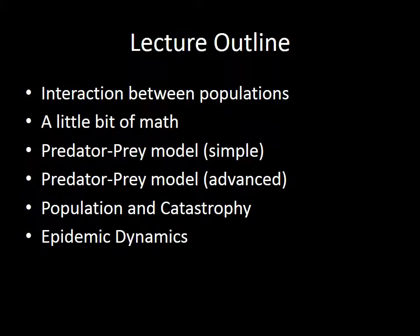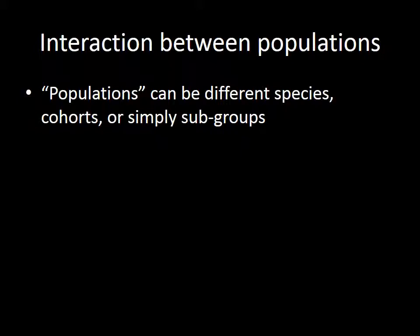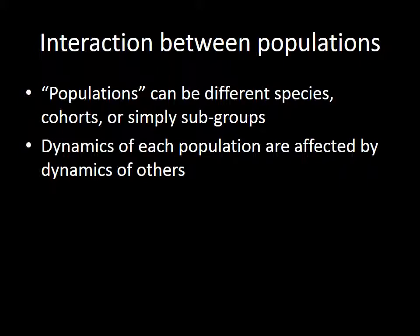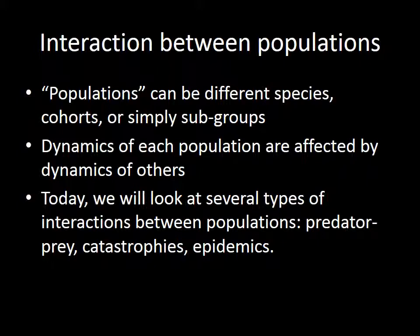Then we're going to talk about another type of interaction between populations, which is epidemics and how epidemics move over time. When we speak about populations — plural — those could be different species, different cohorts, or simply subgroups. The key characteristic of these interactions is that the dynamics of each population are affected by the dynamics of others, so it's a mutual interaction. Today we'll focus on predator-prey, catastrophes, and epidemics.